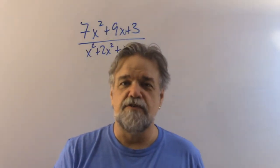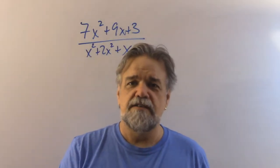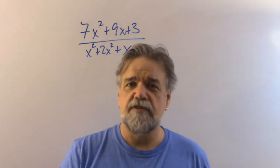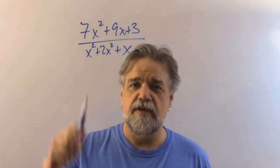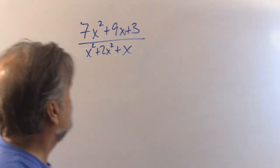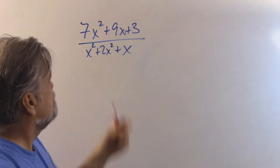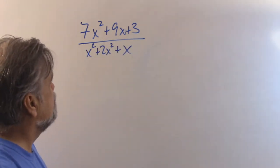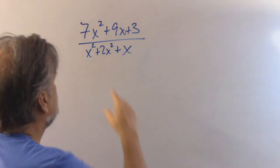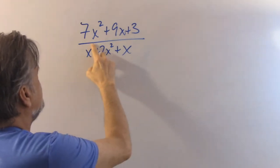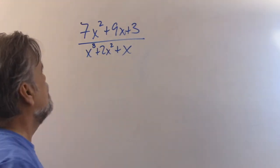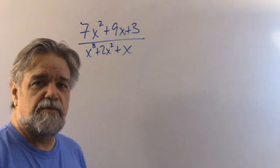Hey math students, how you doing? Today we're going to do some more partial fractions, and we're just going to jump right into it. Here's one right behind my head. We have 7x squared plus 9x plus 3 over x cubed plus 2x squared plus x.